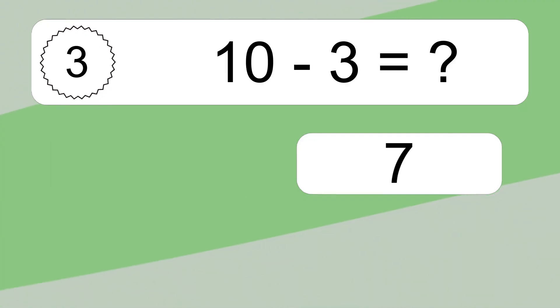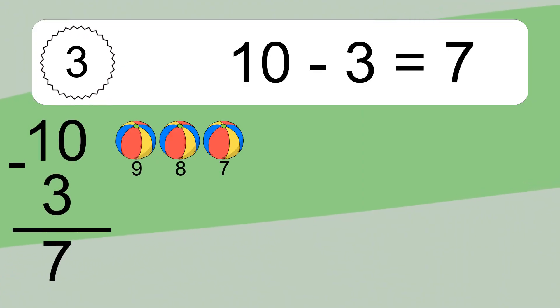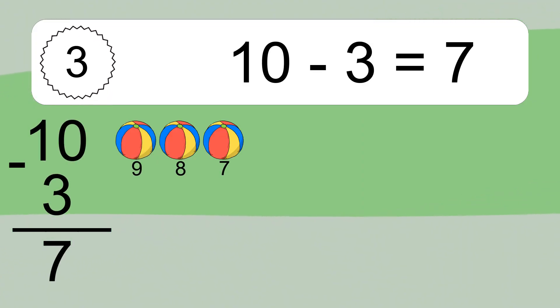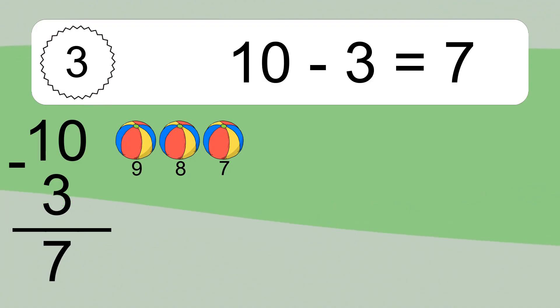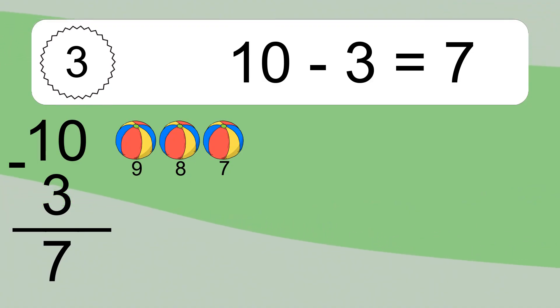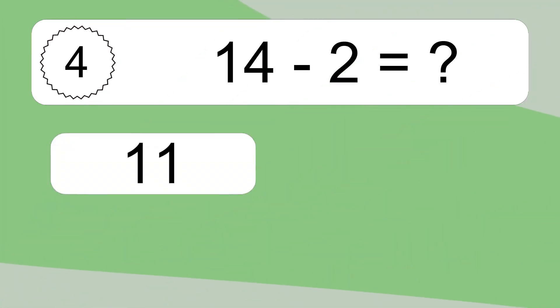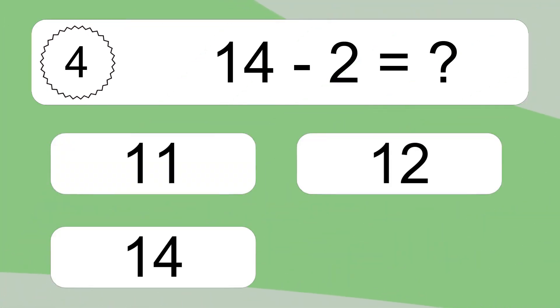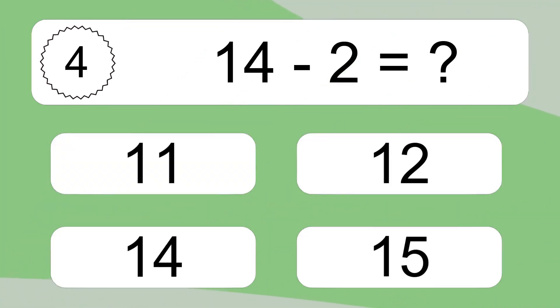10 minus 3 equals 7. Let's count it: 9, 8, 7.